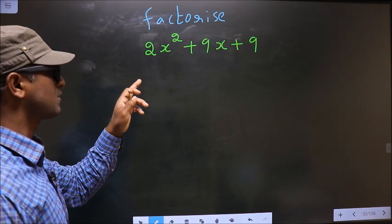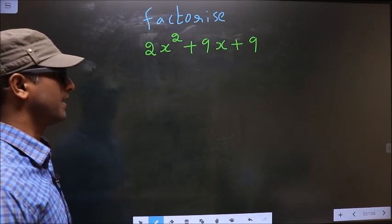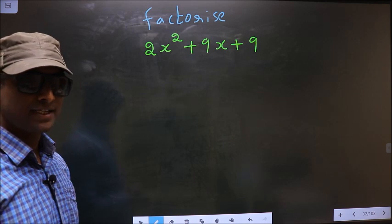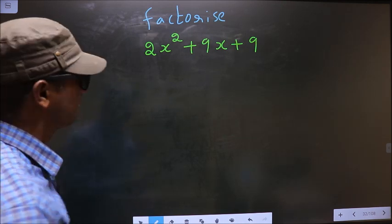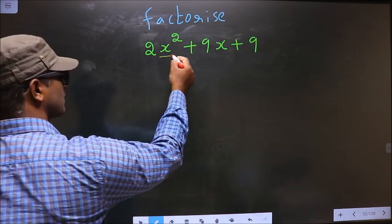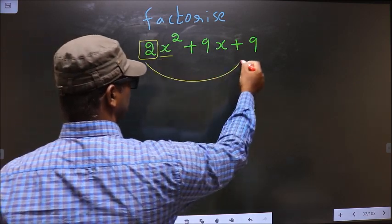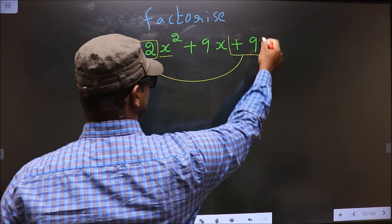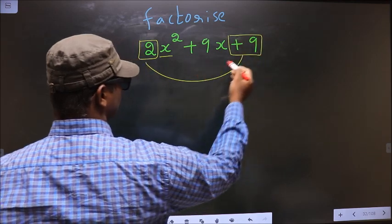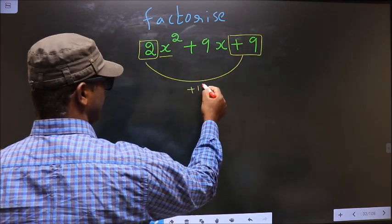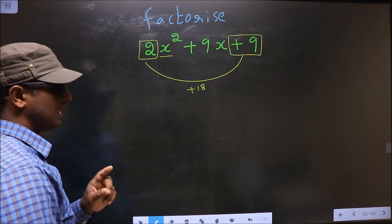Factorize 2x² + 9x + 9. To factorize, step 1: the coefficient of x², which is 2, should be multiplied by the constant, which is +9. So 2 into +9 is +18. This is your step 1.